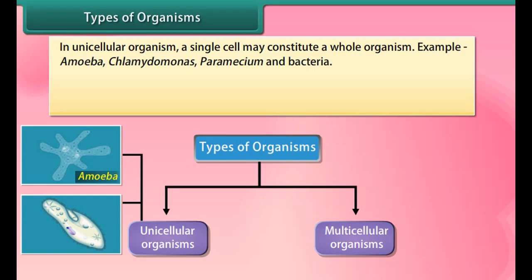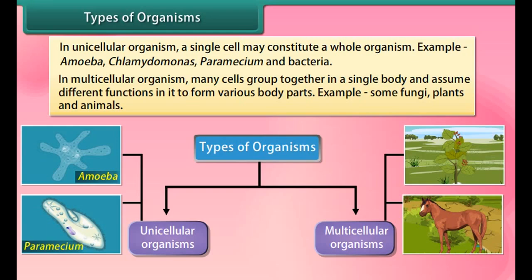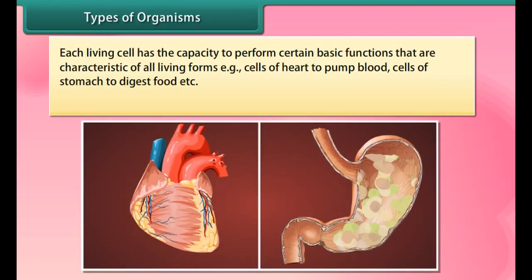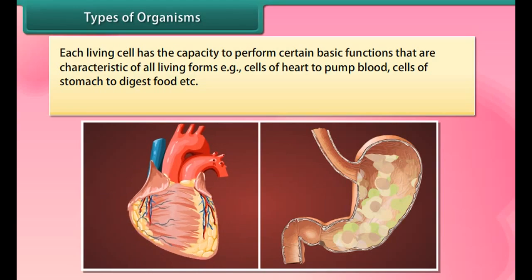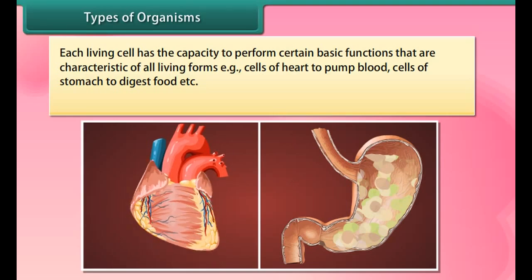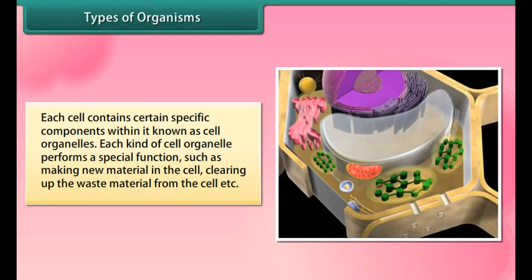There are two types of organisms: unicellular and multicellular. In unicellular organisms, a single cell may constitute a whole organism — examples include amoeba, chlamydomonas, paramecium, and bacteria. In multicellular organisms, many cells group together in a single body and assume different functions to form various body parts — examples include some fungi, plants, and animals.